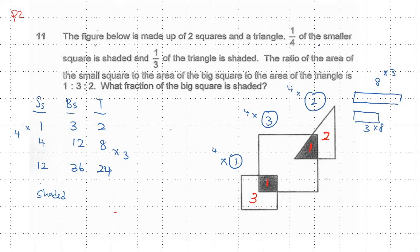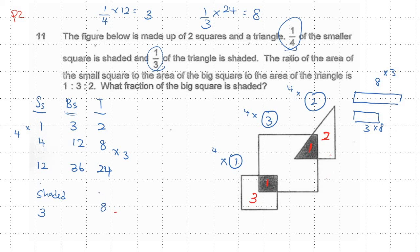Now finding the shaded areas: one fourth of the smaller square is shaded, so one fourth times 12 equals three — three parts of the small square are shaded. For the triangle, one third is shaded: one third times 24 equals eight — eight pieces are shaded. The whole big square is 36, so I subtract the shaded portions from 36.